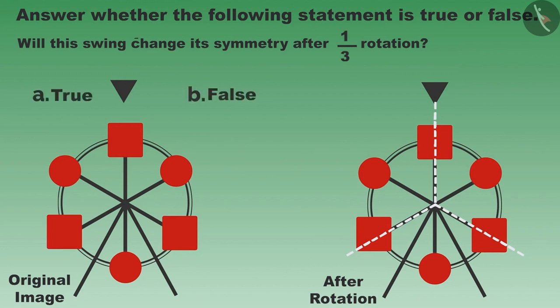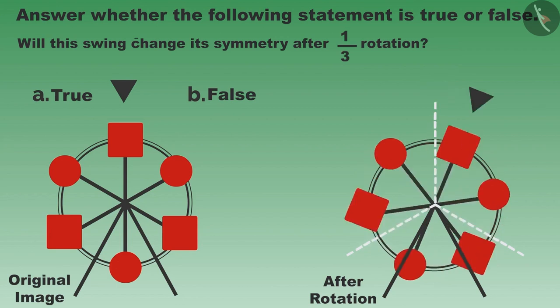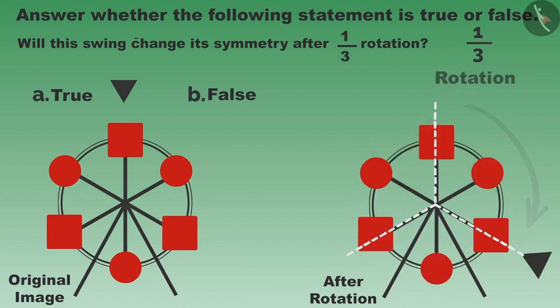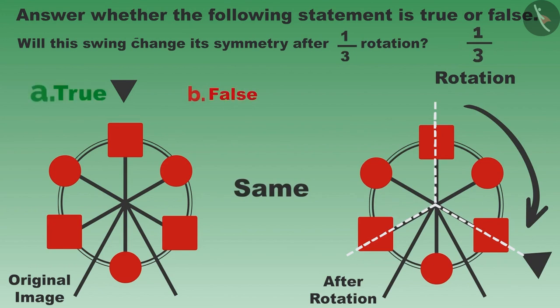Children, will the symmetry change after one-third rotation? Let us rotate it and see. As you can see, it remains the same even after one-third rotation. It is not necessary that objects with one-third rotational symmetry will remain the same after one-sixth rotation.